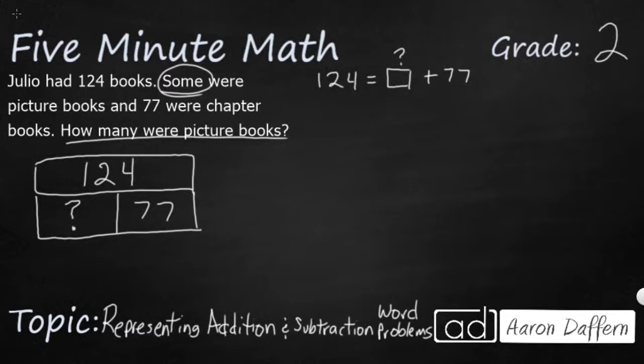Well, there's a few different ways that we can solve this problem. One thing that we can do is we can use the relationship between addition and subtraction to figure out a way that we can solve this problem. You notice how the 124, that whole is on the left side of the equation. That looks a little bit strange.